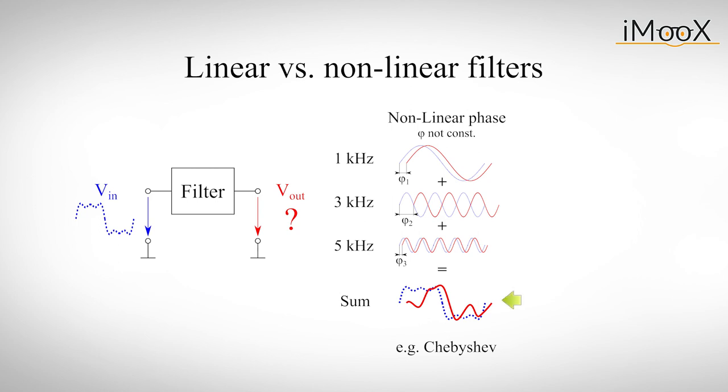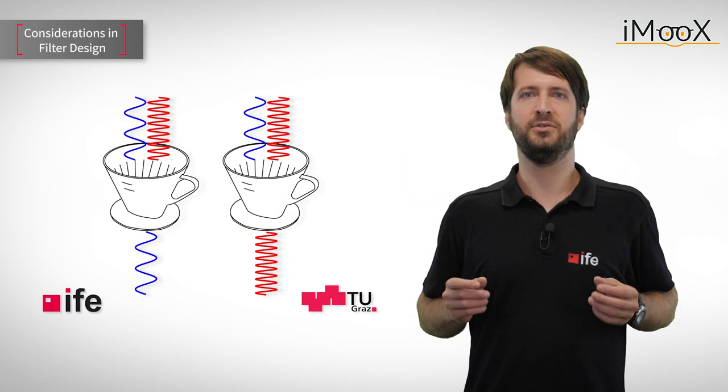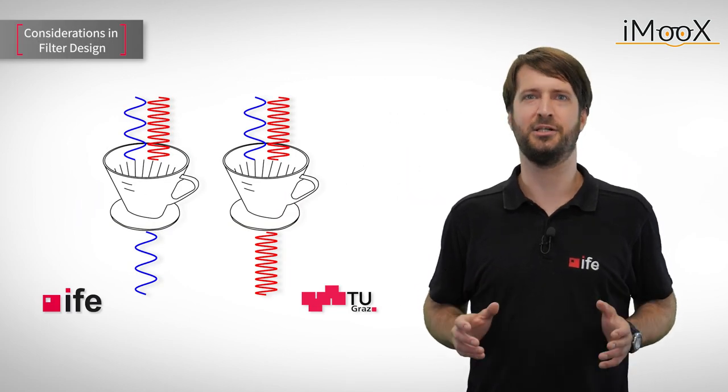As a result, the waveform of a signal in the passband will suffer distortion, which can be undesirable. So if we want a filter with constant time delay, also called a linear phase filter, we rather use a Bessel characteristic. Here the waveforms of all signals within the passband will stay exactly as they were. But then again, the Bessel filter cannot compete with the Chebyshev regarding attenuation above the corner frequency. You see, filter design is a challenging task.